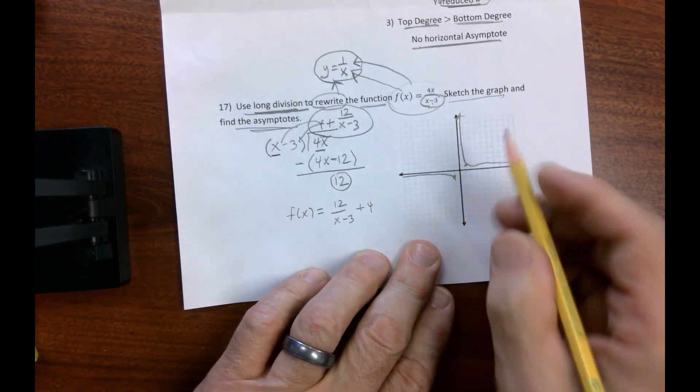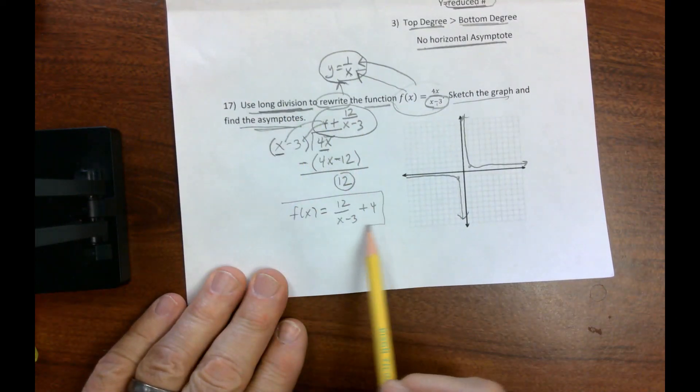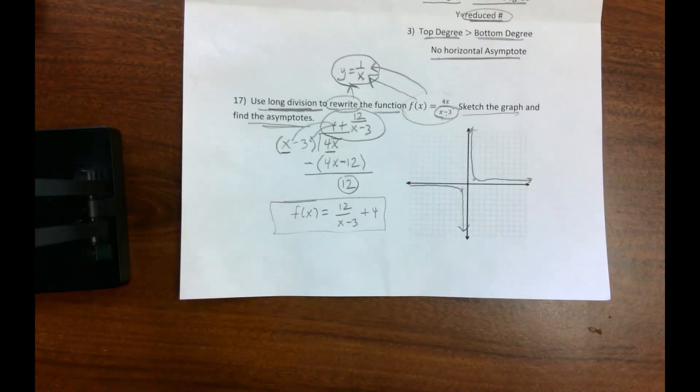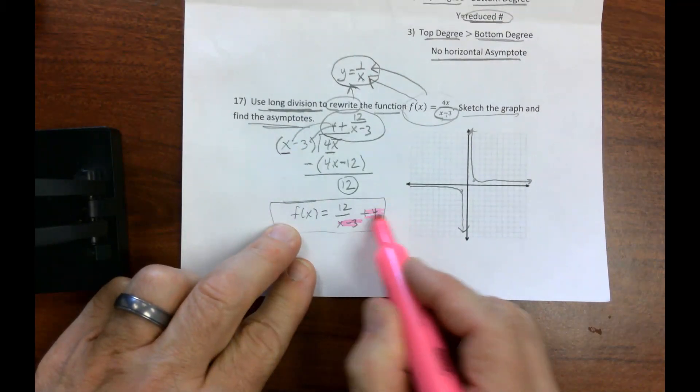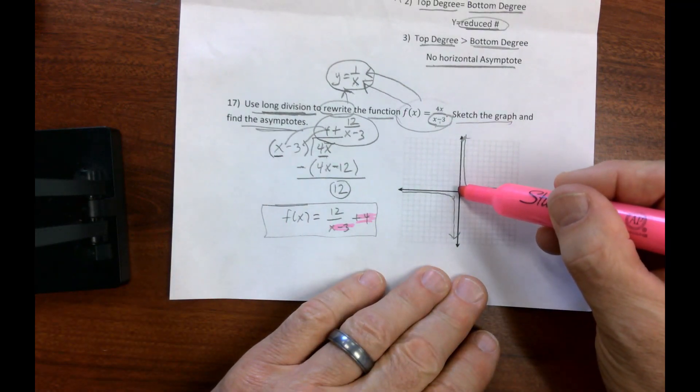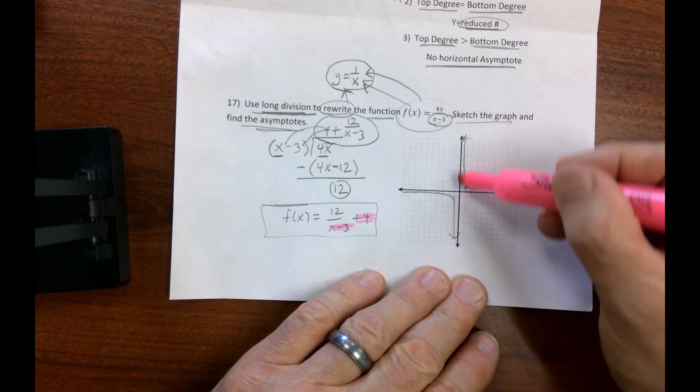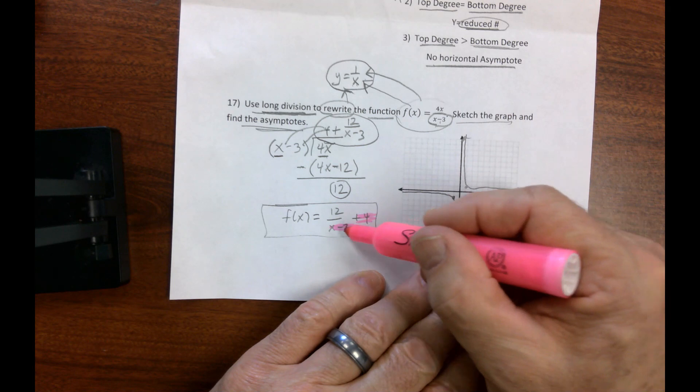And then after using long division, we can now look at this and go, aha, we're going to go right 3 and up 4. Well, that means everything. So I'm going to consider this the center and these are my asymptotes. There's x equals 0, there's y equals 0. Everything moves right 3 up 4.